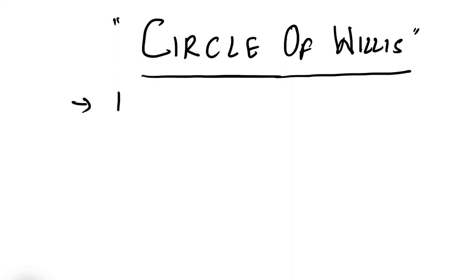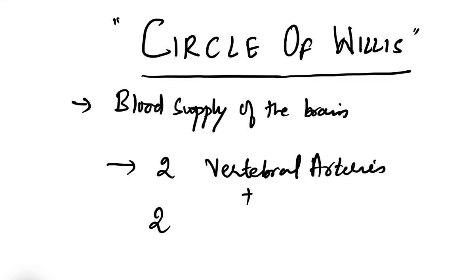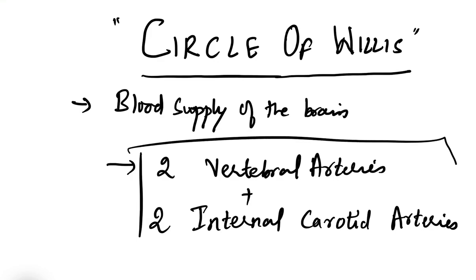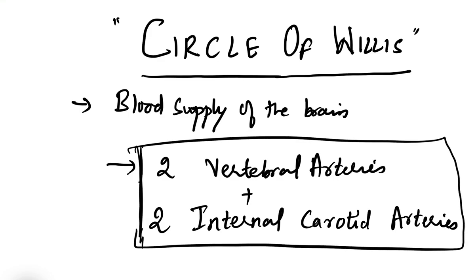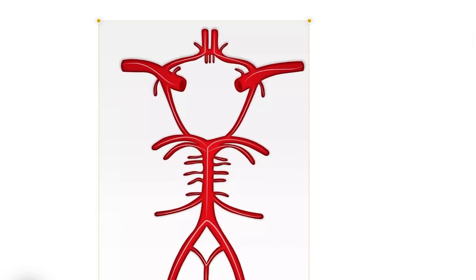The Circle of Willis is related to the blood supply of our brain. Basically four major arteries supply the brain: two vertebral arteries — right vertebral artery and left vertebral artery — and two internal carotid arteries — right internal carotid artery and left internal carotid artery. Together they form four arteries which supply the brain.